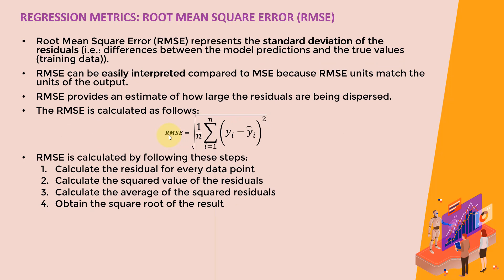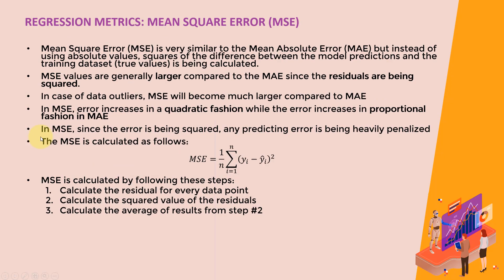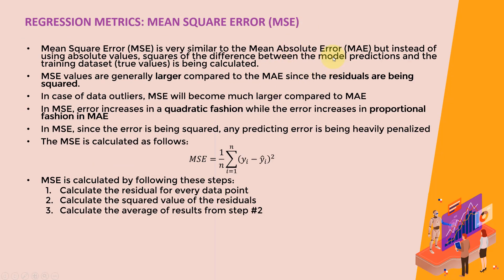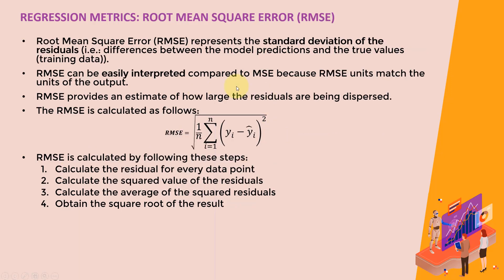The next metric is RMSE, or Root Mean Square Error. We take the previous metric — the mean squared error — and then obtain the square root of it. You take the residuals, square them, obtain the average, and then take the square root back. What's powerful about RMSE is that it can be easily interpreted: in the case of MSE, squaring changes the units of the output relative to the original dataset. But with RMSE, taking the square root back means the units match the units of the output. RMSE also provides an estimate of how large the residuals are being dispersed.